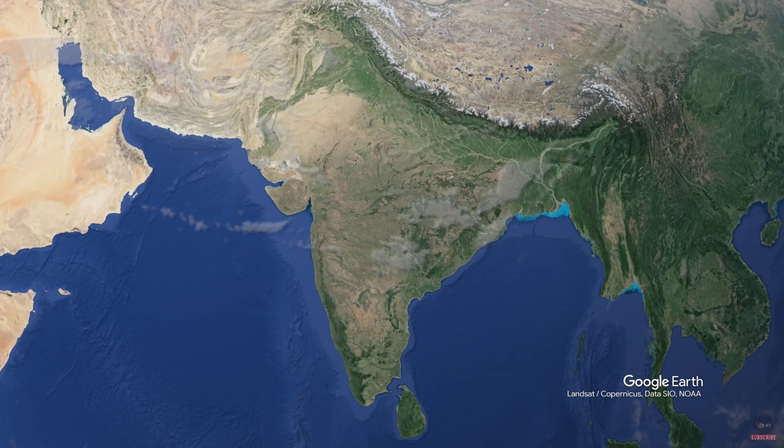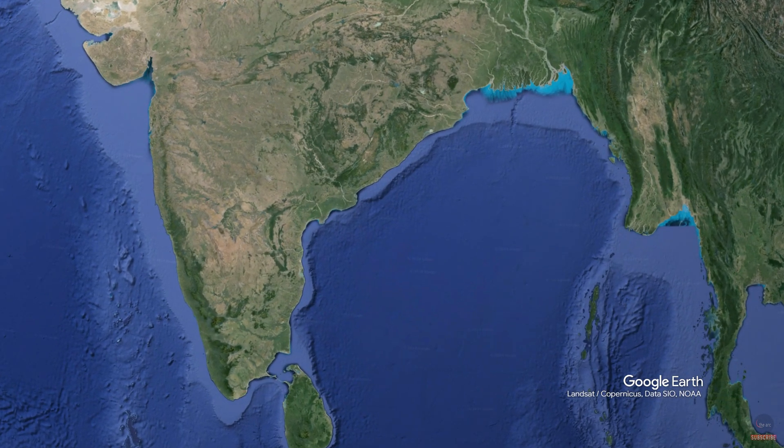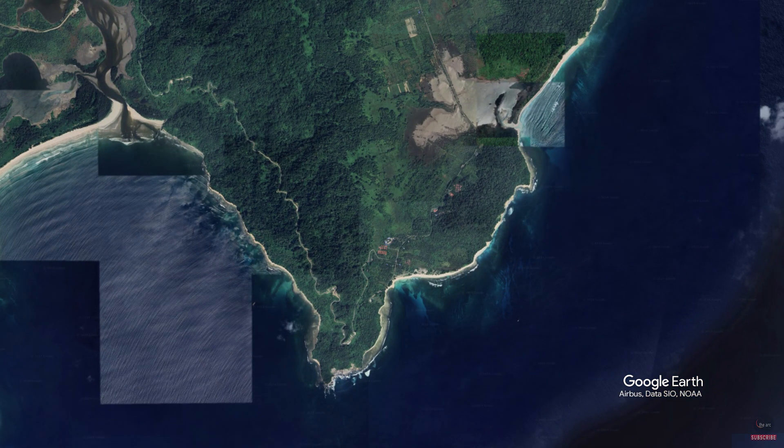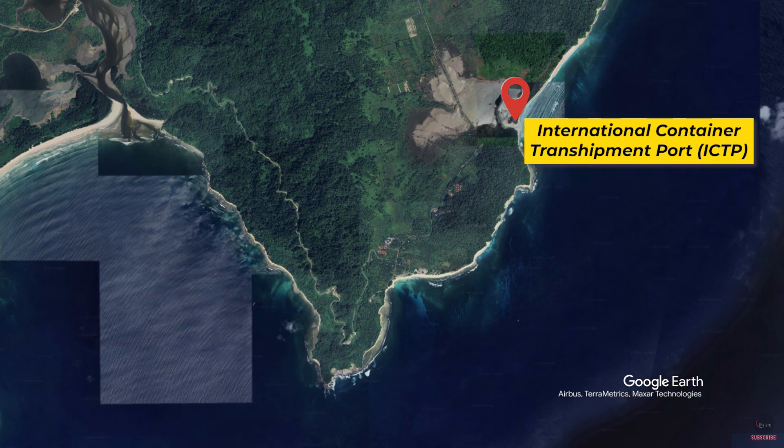India is developing a transshipment port project at Galathea Bay in the Great Nicobar Islands of the Andaman and Nicobar Islands in the Bay of Bengal. It will be called the International Container Transshipment Port or ICTP.